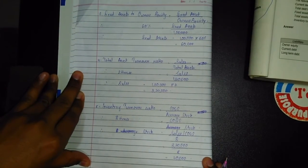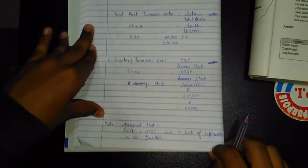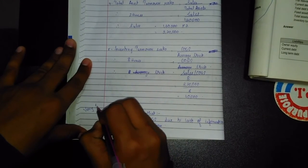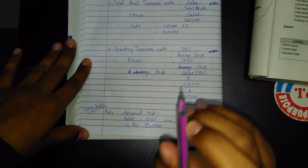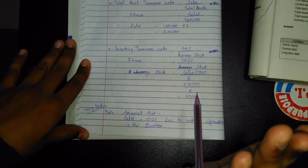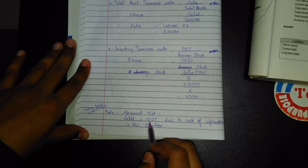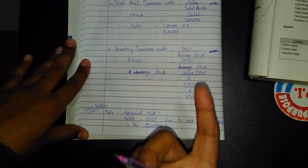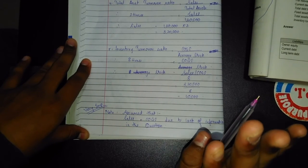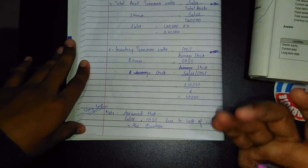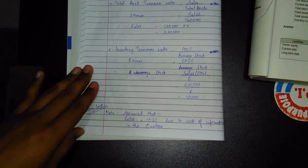Please copy the assumption note — it is very important. If you have the question of why sales equals COGS, the formula of COGS has been explained in previous lectures, so please go back and find out. This sum is now completed and we'll move on to the next one.